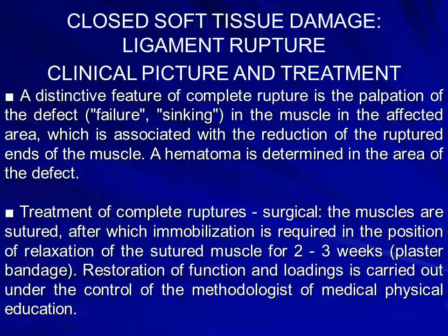A distinctive feature of complete rupture is palpation of a defect — a sinking in the muscle at the affected area — associated with retraction of the ruptured muscle ends. A hematoma is found at the defect. Treatment of complete rupture is surgical: the muscles are sutured, after which immobilization is required in the position of relaxation for 2–3 weeks with a plaster bandage. Restoration of function is carried out under the control of medical physical education.